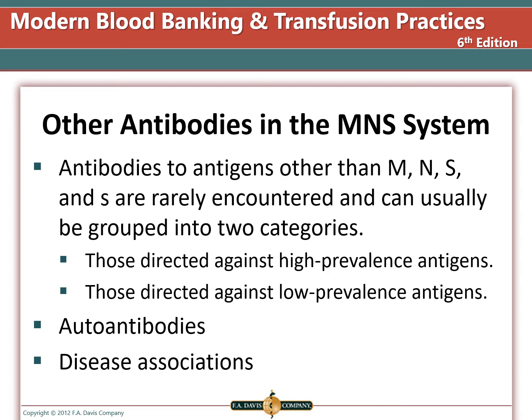Antibodies to antigens other than M, N, Big S, or Little s are rarely encountered and fall into two categories. Anti-U is against a high-prevalence antigen and can cause fatal hemolytic transfusion reactions and hemolytic disease of the fetus and newborn — family donation or the rare donor database may be needed. For antibodies to low-prevalence antigens, transfusing cross-match compatible cells is sufficient and compatible units are easy to find.